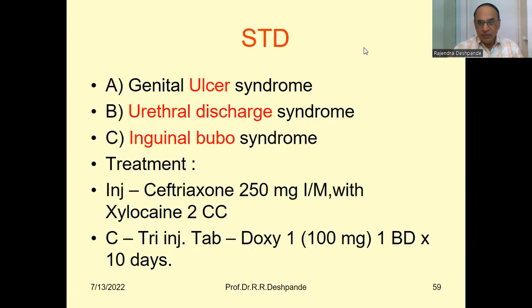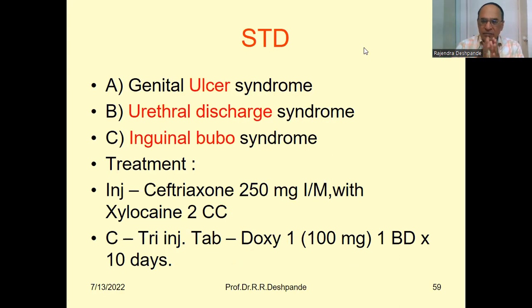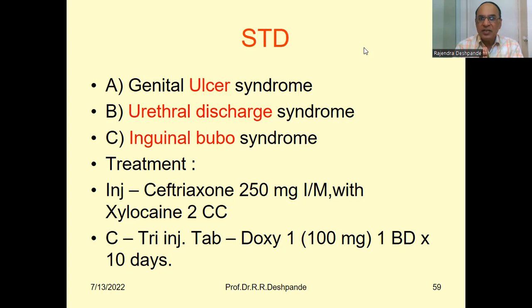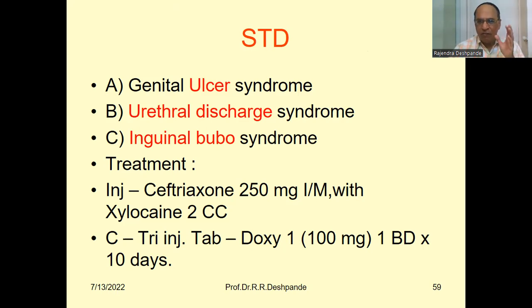In summary, this is a very important slide covering syphilis, gonorrhea, chancroid, LGV, and granuloma inguinale. Nowadays, the dermatologist or venereal disease specialist classifies all these diseases into three categories of sexually transmitted diseases: genital ulcer syndrome — syndrome meaning a group of symptoms — urethral discharge syndrome, and inguinal bubo syndrome.